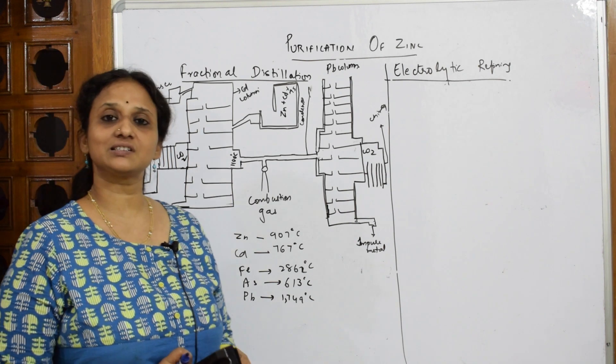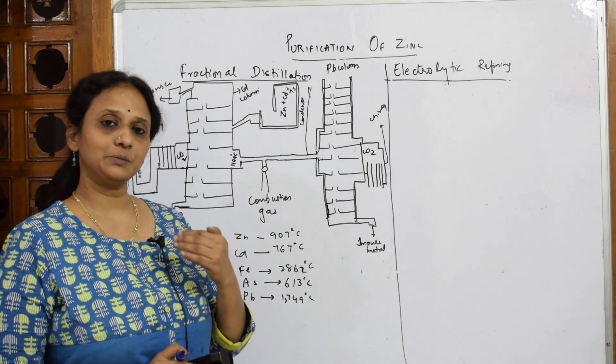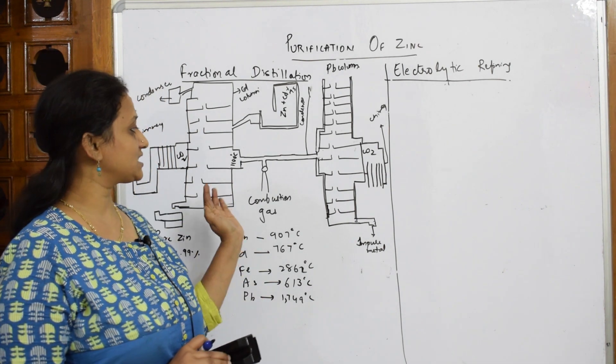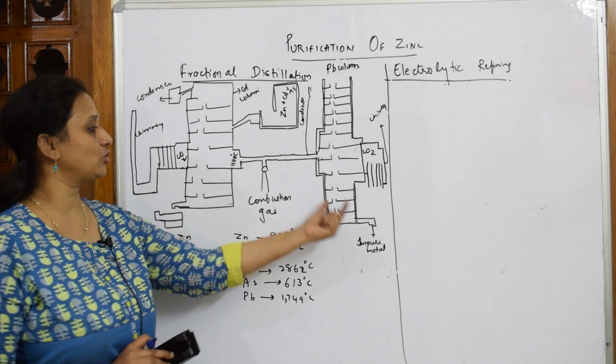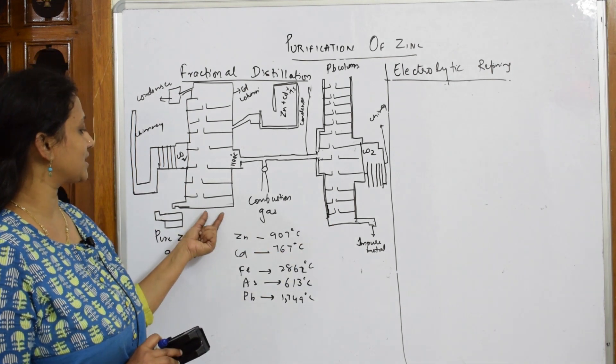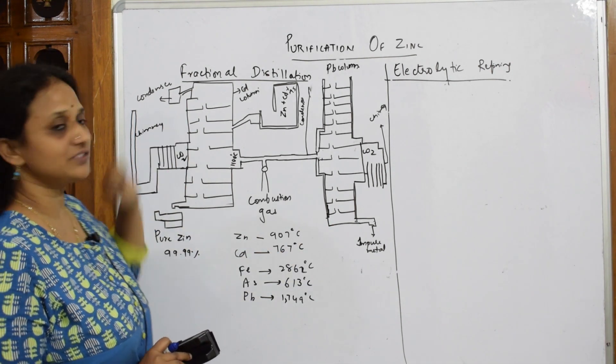When we speak about fractional distillation, it is basically the process of distillation or separating based on boiling points. We have two fractionating columns - one fractionating column here, another one there - and you have a condenser which is attached.